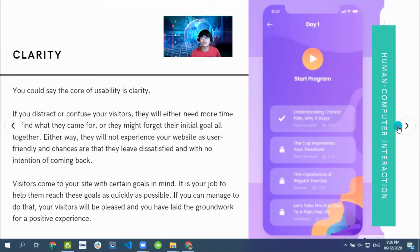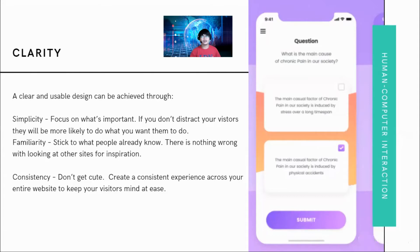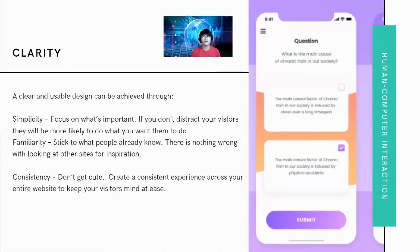A clear and usable design can be achieved through: first, simplicity — it must be as simple as possible, focus on what's important, and if you don't distract your visitors, they will be more likely to do what you want them to do. Second, familiarity — stick to what people already know. There is nothing wrong with looking at other sites for inspiration. Third, consistency — don't get cute. Create a consistent experience across your entire website to keep your visitors' minds at ease.